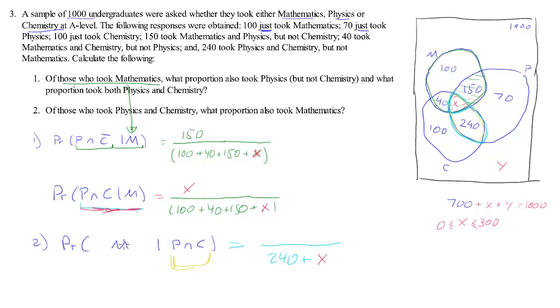And what proportion of those took maths? Well, it turns out, it is that red area. That red area is the area that intersects with maths. So it's x over 240 plus x. That's the solution. Further, we cannot go.